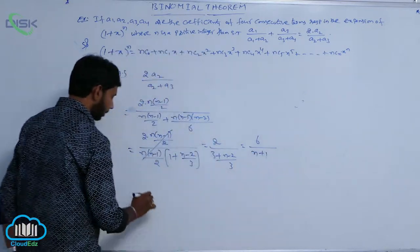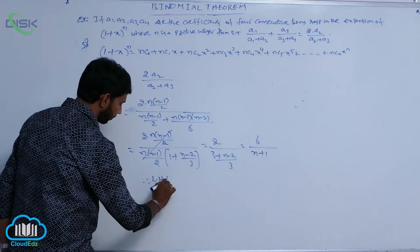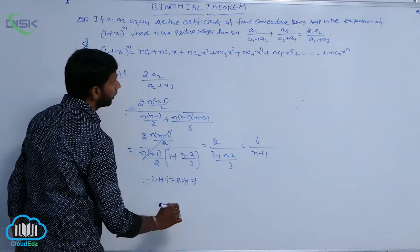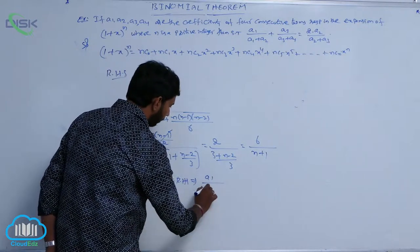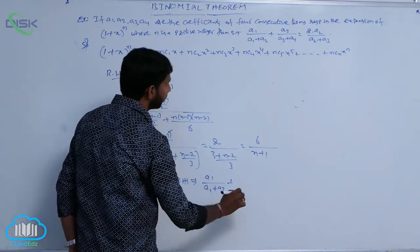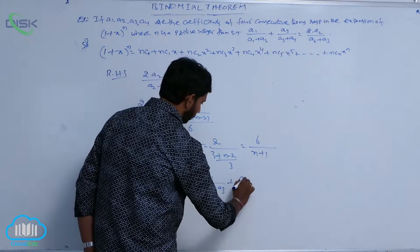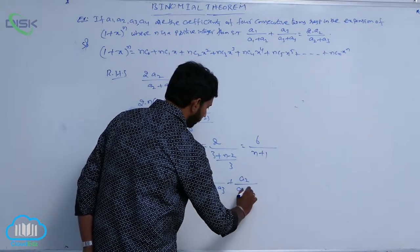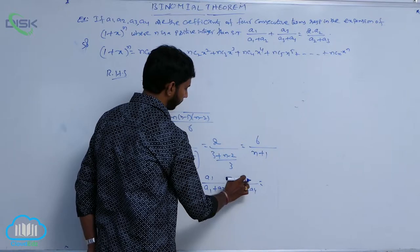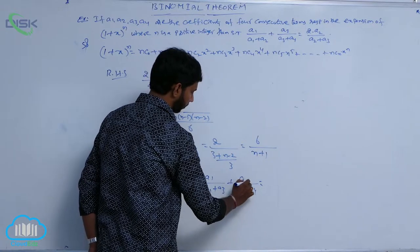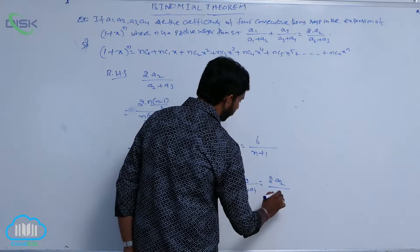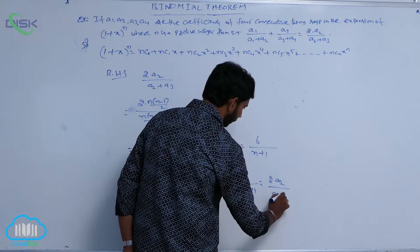Therefore, LHS is equal to RHS. That implies A1/(A1+A3) plus A2/(A3+A4) is equal to 2A2/(A2+A3).